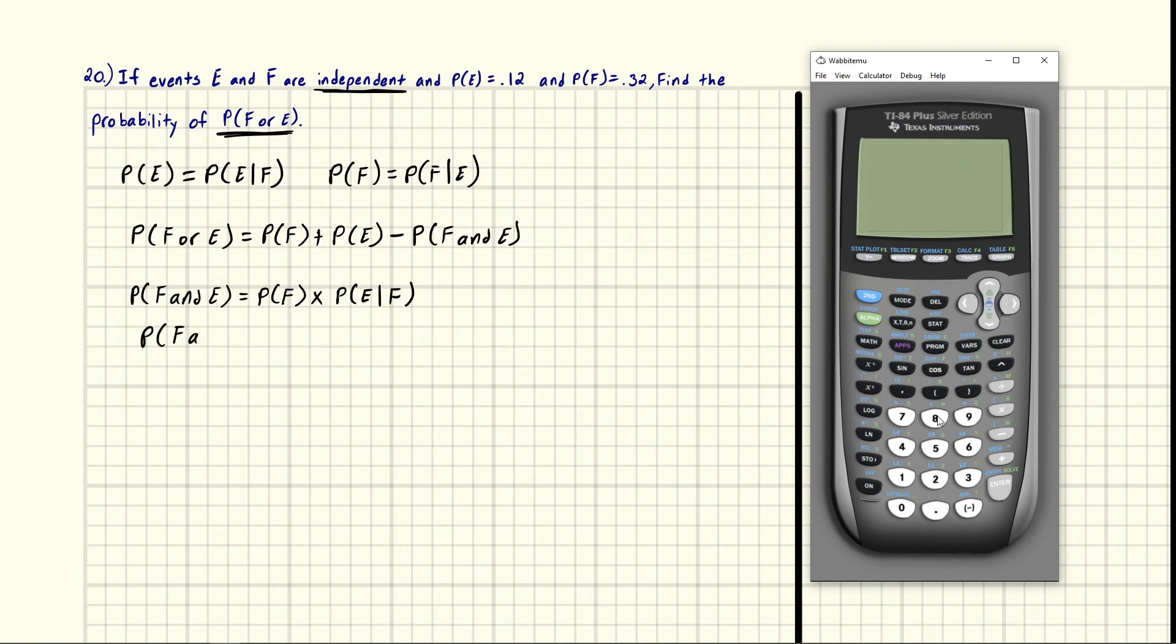So we can replace this with the probability of E. We could say the probability of F and E is equal to the probability of F times the probability of E. And this holds true when events are independent.